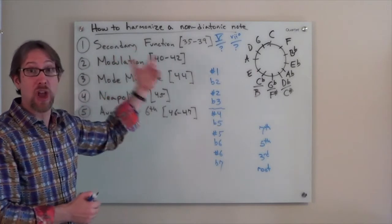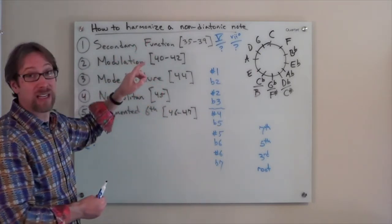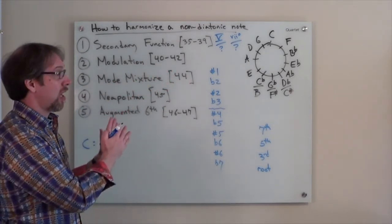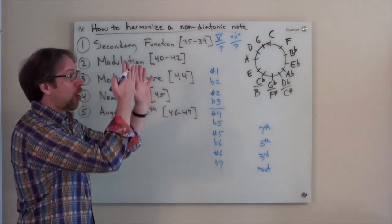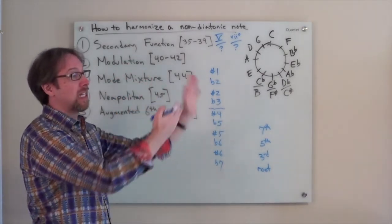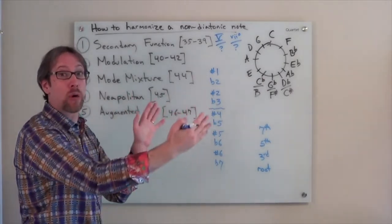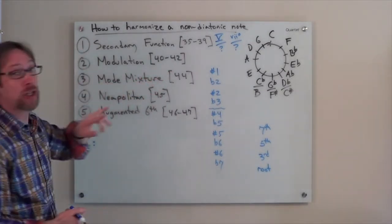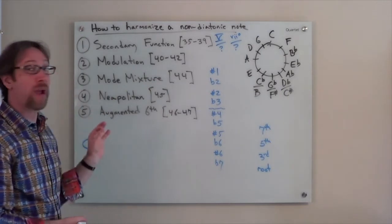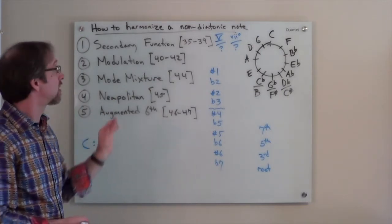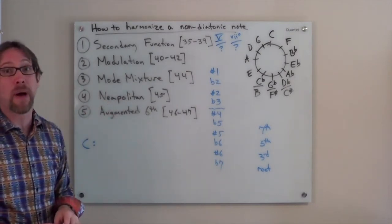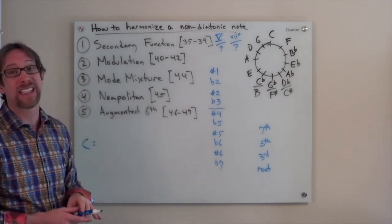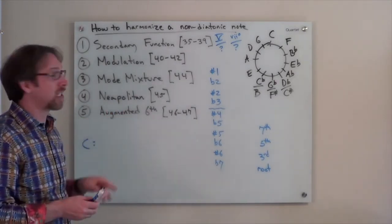In the case of modulation, which is another way for us to deal with harmonizing a non-diatonic note, this is covered in lessons 40 to 42. We might harmonize it with a non-diatonic chord, but then it continues in a whole other key with diatonic chords of a new key. Mode mixture, which is covered in lesson 44, is another way. We can use a Neapolitan chord, which is discussed in lesson 45, and then finally use of the augmented sixth chord, which is lessons 46 and 47.